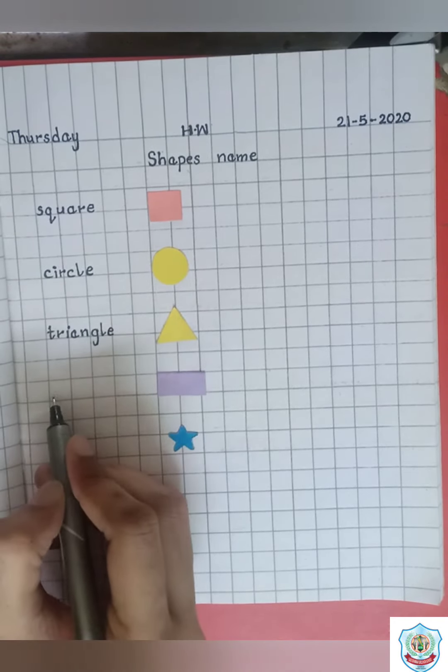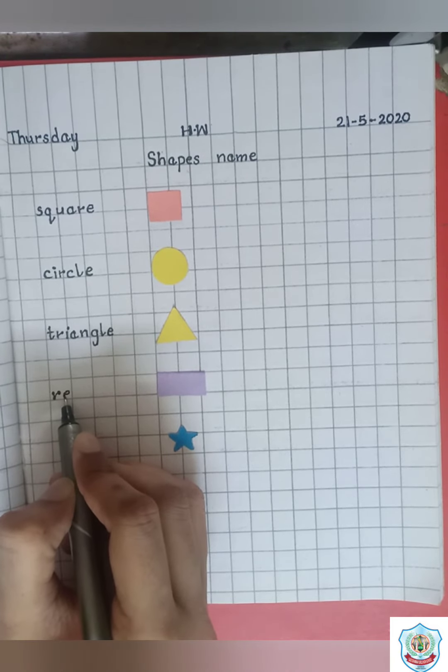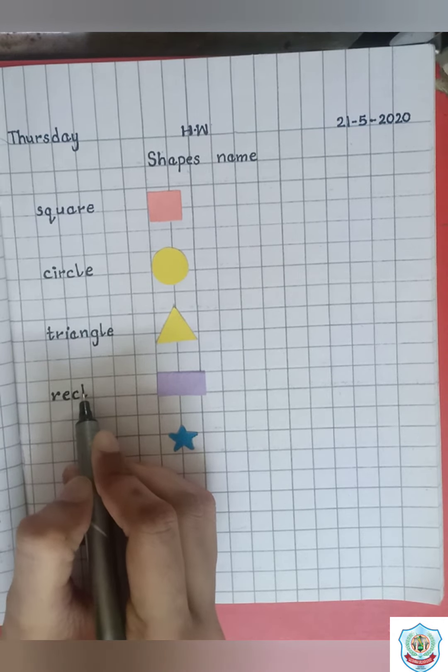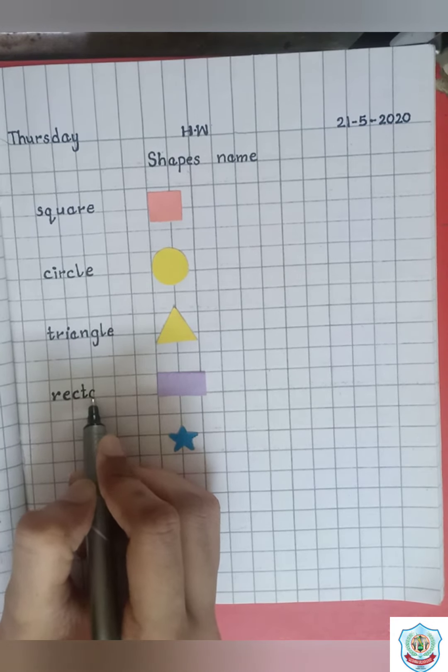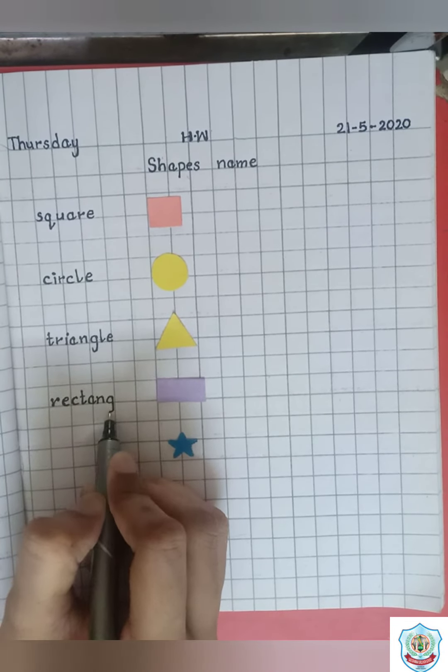Write here spell of rectangle. R-E-C-T-Rect-A-N-G-L-E. Angle rectangle.